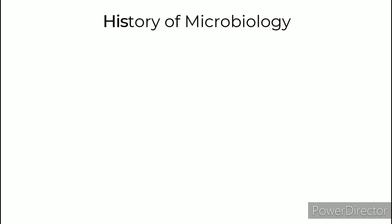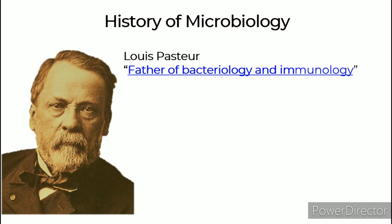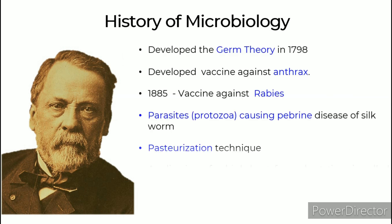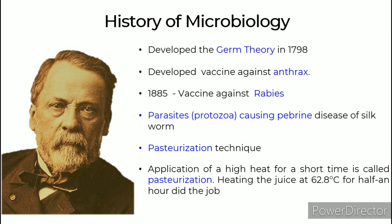Louis Pasteur, father of bacteriology and immunology, disproved spontaneous generation of microbes by preventing dust particles from reaching sterile broth. In 1861, he completed experiments that laid to rest spontaneous generation, and showed microbes caused fermentation and spoilage. He developed the germ theory in 1857.